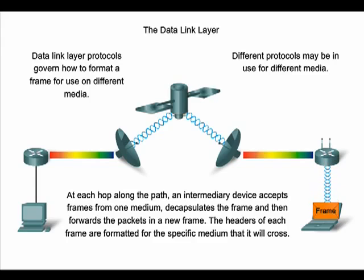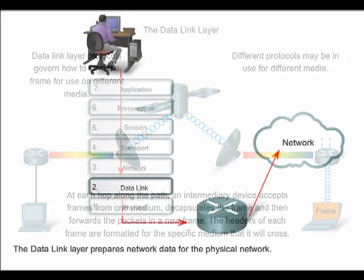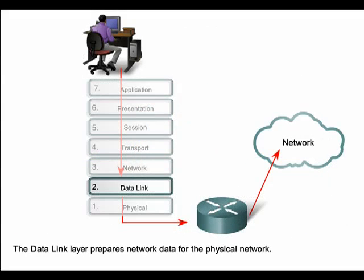It is the role of the data link layer to prepare network layer packets for transmission and to control access to the physical media. The data link layer exists as a connecting layer between the software processes of the layers above it and the physical layer below it. It relieves the upper layers from the responsibility of putting data on the network and receiving data from the network.